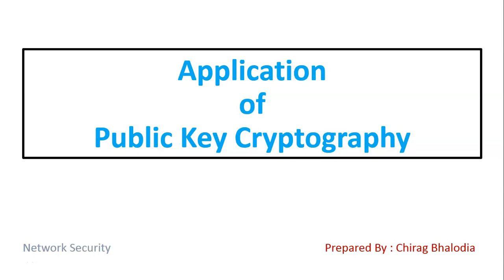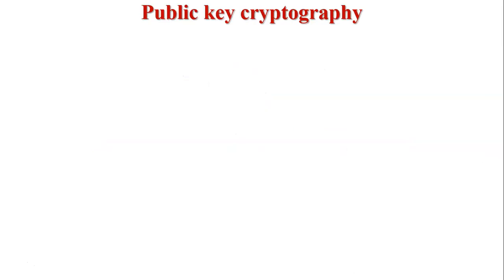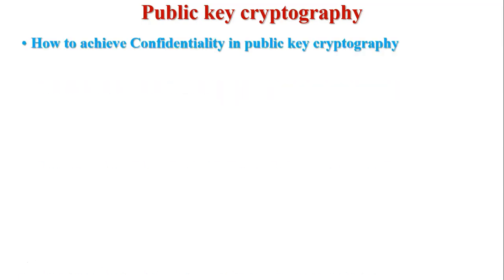Hello friends, myself Chirag. In this video I am going to discuss the application of public key cryptography, or asymmetric key cryptography, a topic of network security. Before discussing the applications, in public key cryptography there are two different keys used for encryption and decryption — a pair of keys: one is the public key and the second is the private key. The public key is shared with all users in the network and the private key remains private to the particular user.